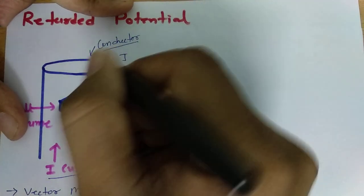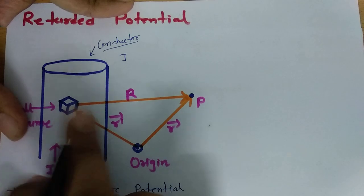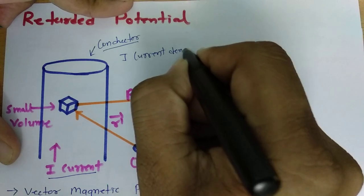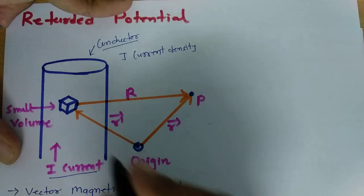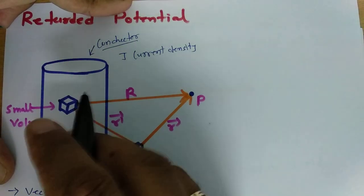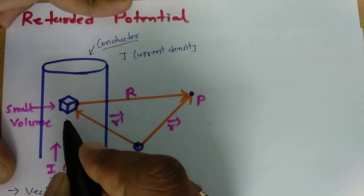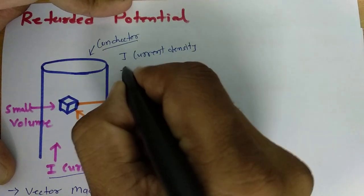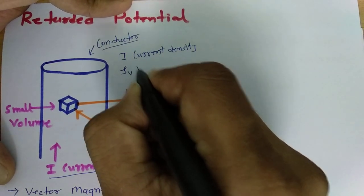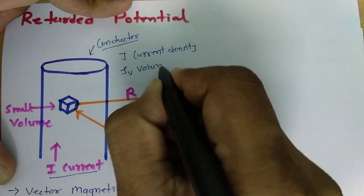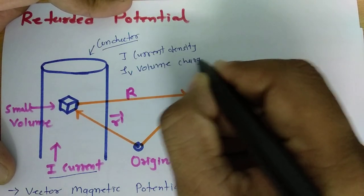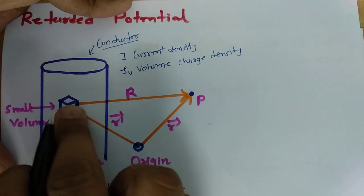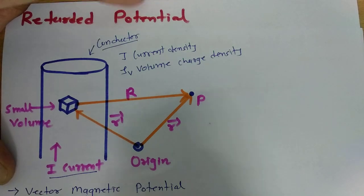Current density is j in this conductor. Now, because charges are flowing in this direction, in this small differential volume there will be a little amount of charge. So volume charge density is ρv — rho v is the volume charge density which is present in this small differential volume because current i is passing.